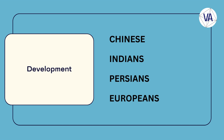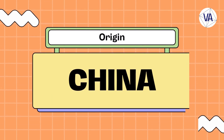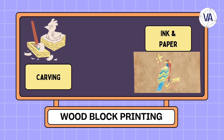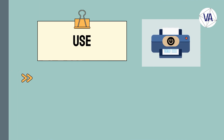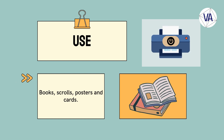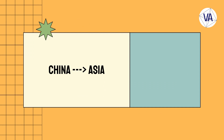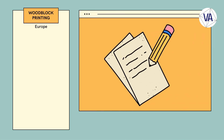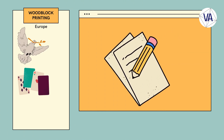The first form of printing that used movable type was woodblock printing, which originated in China around the 7th century during the Tang Dynasty. Woodblock printing involved carving a block of wood with the desired text or image, applying ink to the surface, and pressing it onto paper or cloth. It was used to produce books, scrolls, posters, and cards. The oldest surviving printed book with a precise publishing date is the Chinese Buddhist Diamond Sutra, printed by woodblock in May 868. Woodblock printing spread from China to Korea and Japan, where it was used to print religious texts, literary works, and art, and also reached Europe by the 14th century, where it was used to print religious images, playing cards, and calendars.